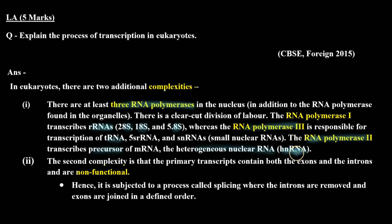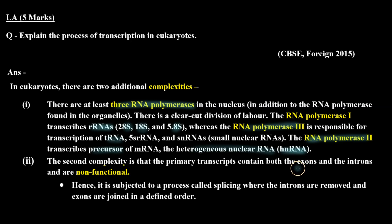In the RNA, coding sequences called exons and non-coding sequences called introns are both present. But we only need the coding sequences, so there are some modifications required. The hnRNA transcription occurs in the nucleus but translation or protein synthesis occurs in the cytoplasm, so the RNA needs to be moved out. The introns are removed and exons are joined together in a process called splicing.